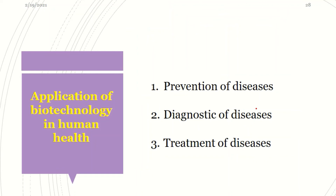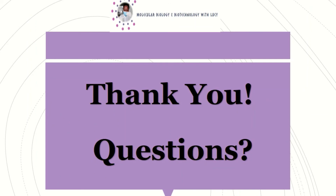Finally, we can summarize the application of biotechnology in human health in three ways: prevention of disease, like vaccines; diagnosis of diseases, when we use diagnostic kits; and treatment of diseases, like gene therapy among others. Thank you so much for being part of this lesson. Stay tuned as we discuss more biotechnological techniques.